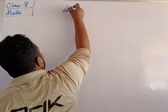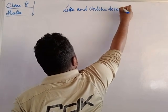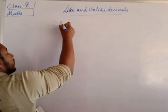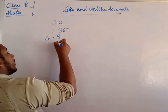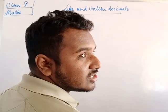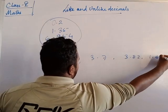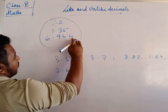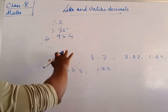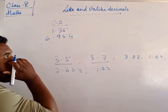Like and unlike decimals — just as we had like and unlike fractions, decimals are the same way. For example: 0.2, 1.35, 6.954 — these are three different types of decimals. To find out which are like and unlike decimals, look here: after the point, one digit, one digit, one digit — so after the point, one digit means they are like decimals.